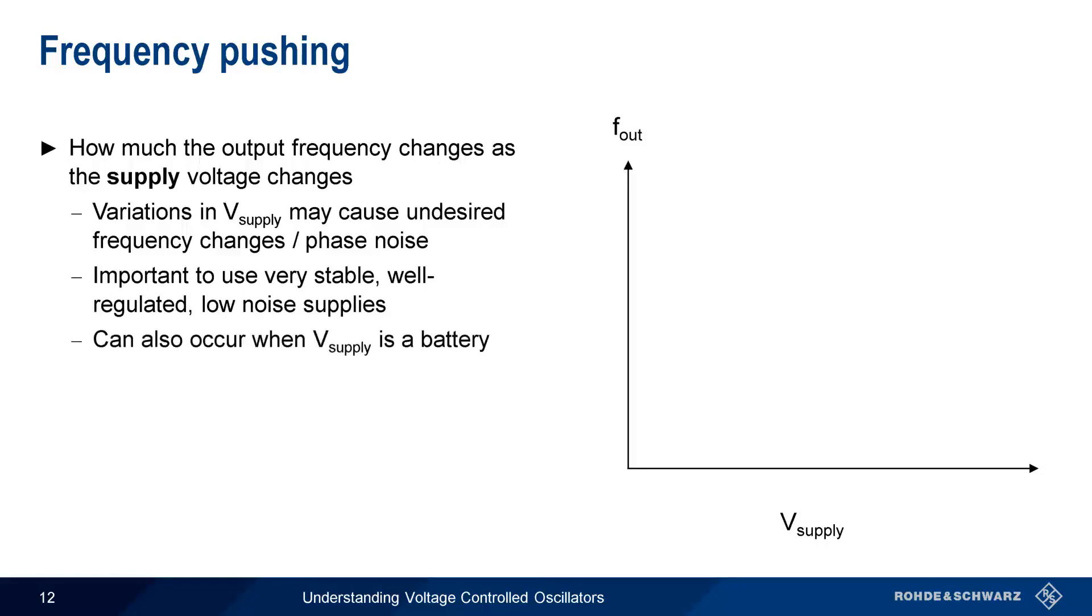And frequency pushing can also occur when the VCO supplies a battery, whose voltage begins to drop over time. We characterize frequency pushing by fixing the tune voltage, and then varying the supply voltage over a given range.